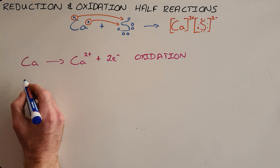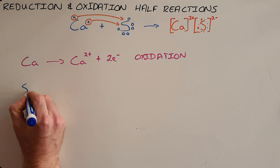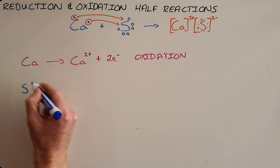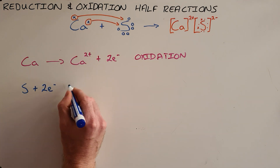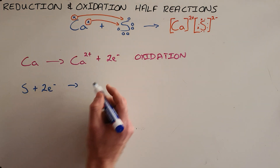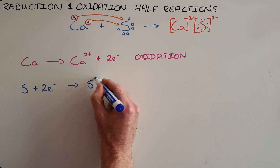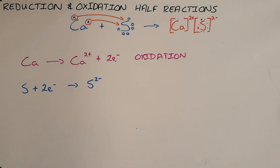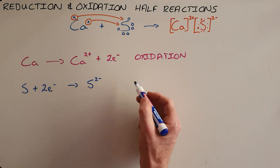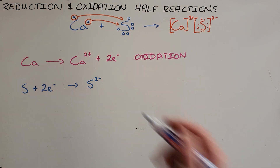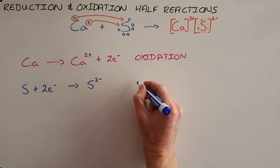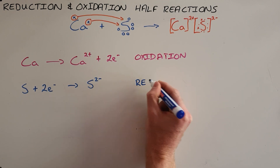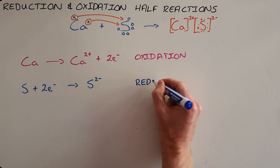At the same time as this oxidation, we have another reaction taking place, and that is the reaction in which sulfur is gaining two electrons to end up with a charge of 2-. As a result, we can see that sulfur has gained electrons, and we call that a reduction reaction.